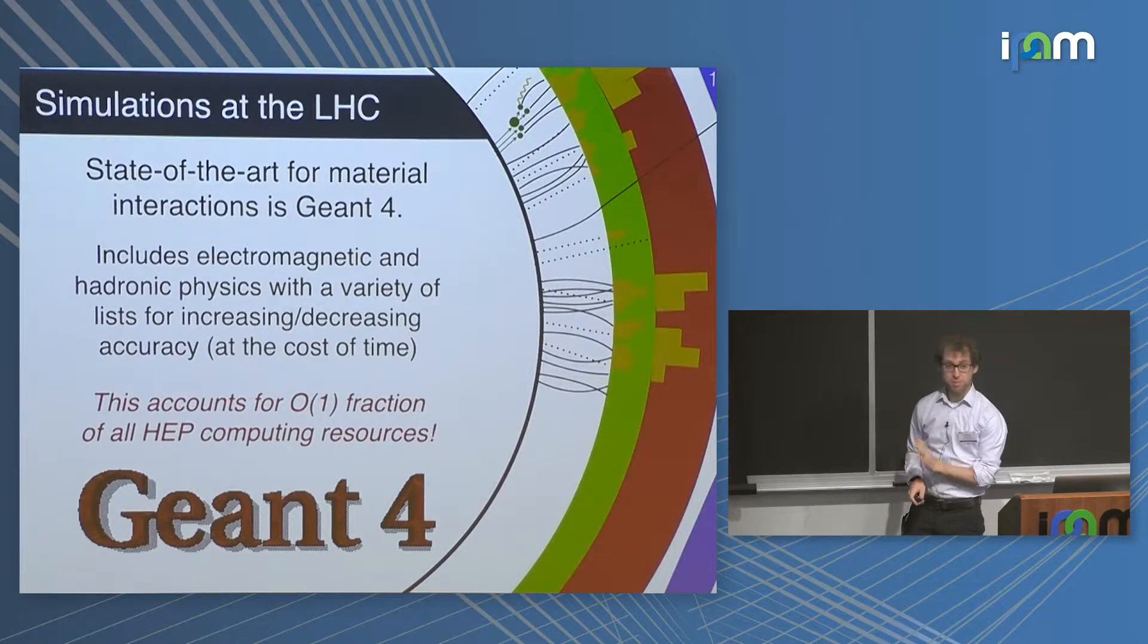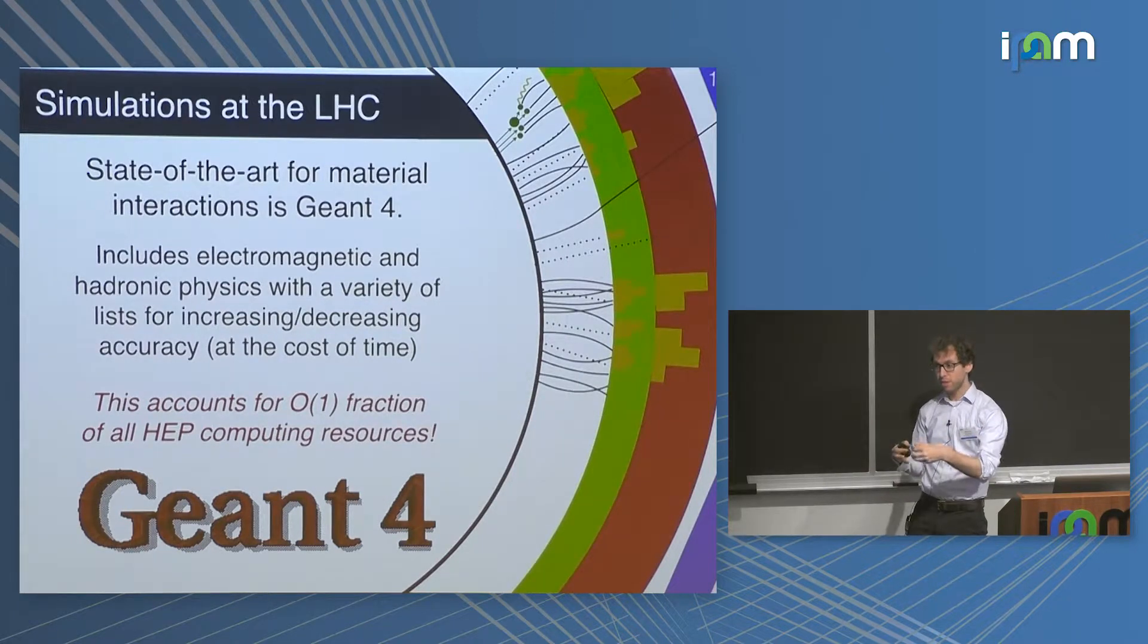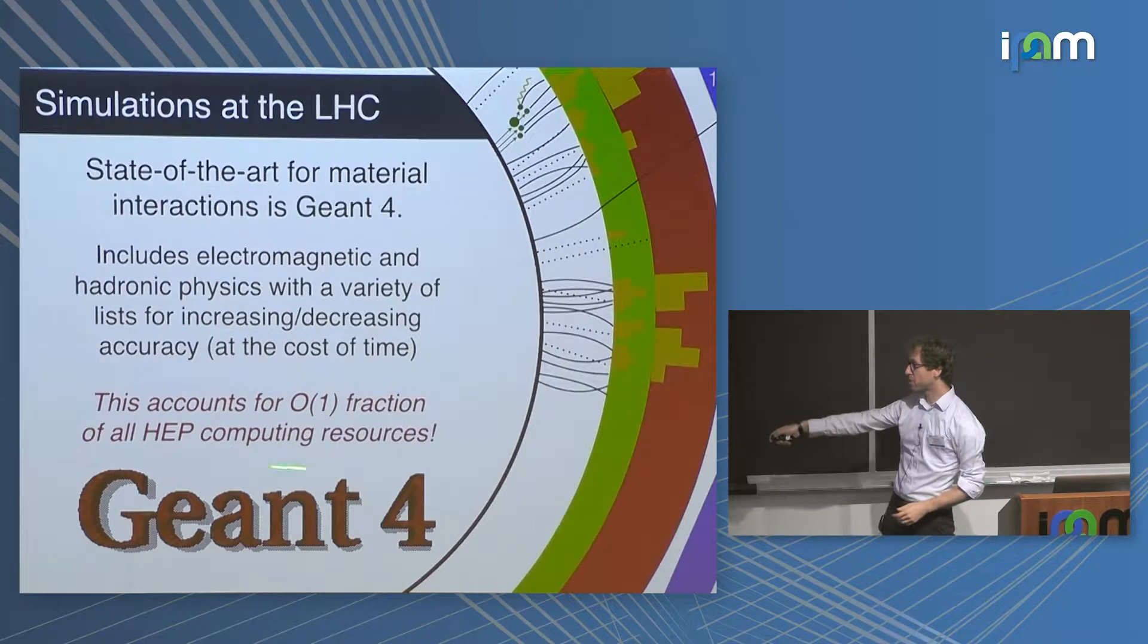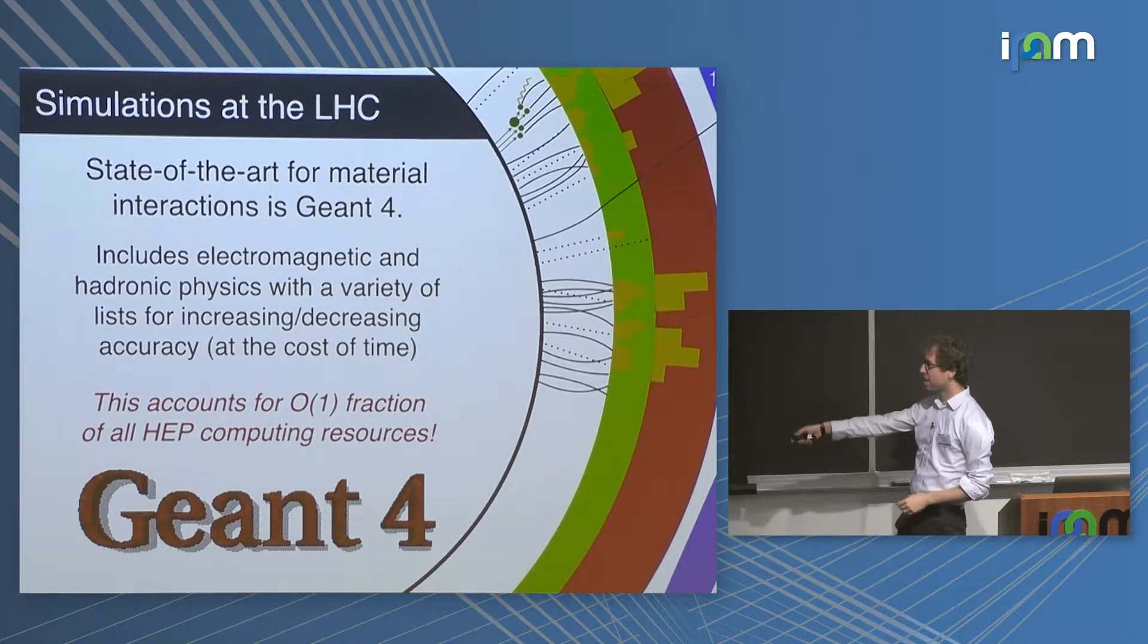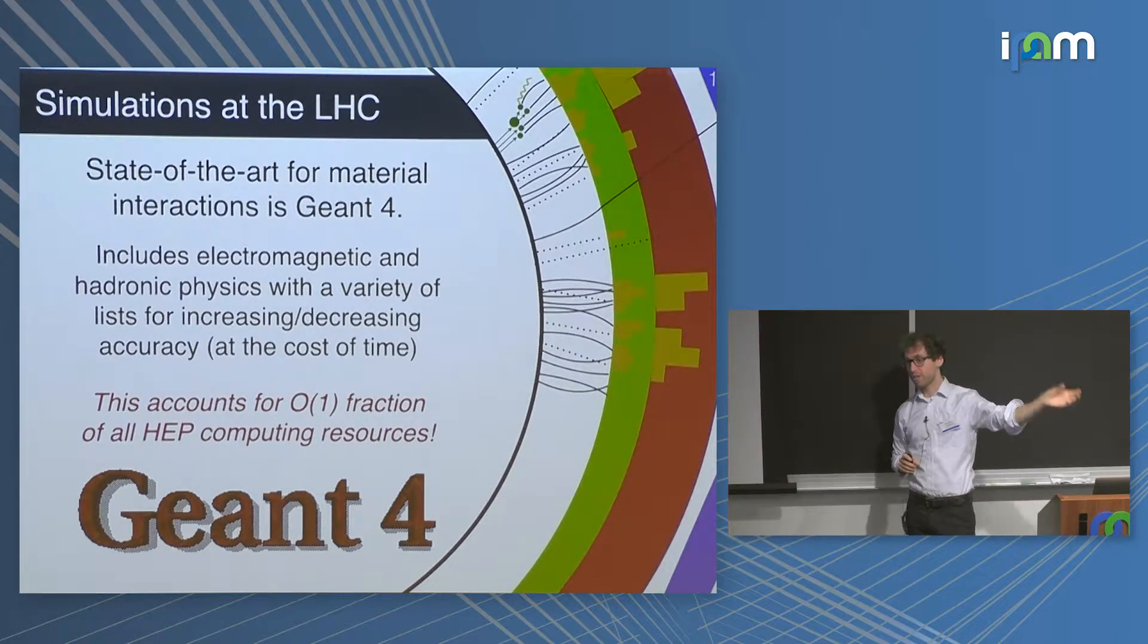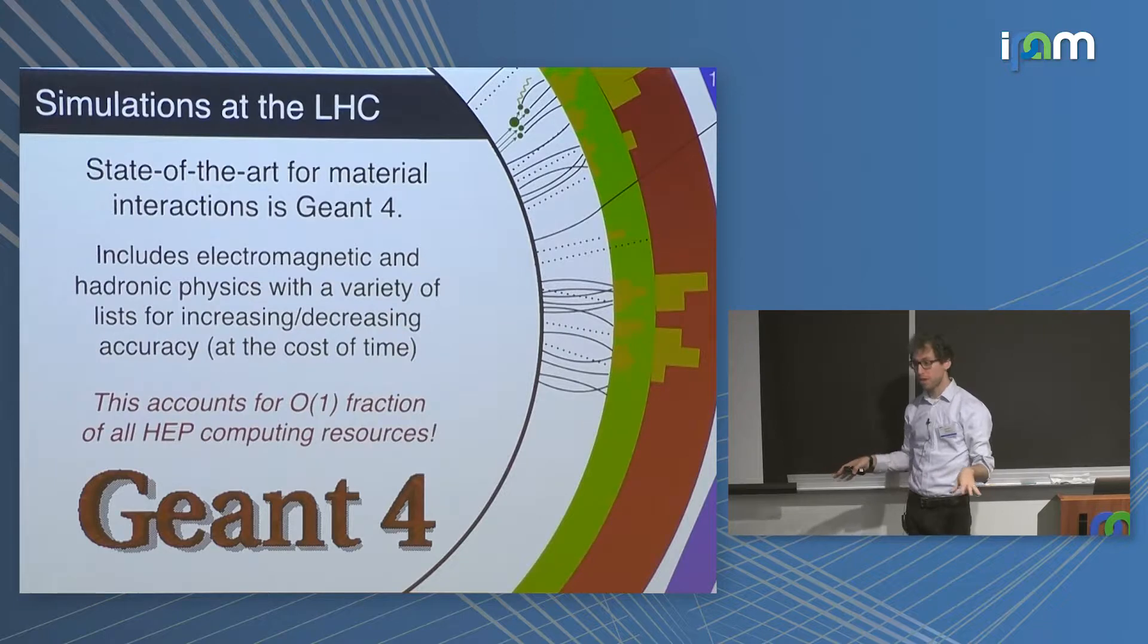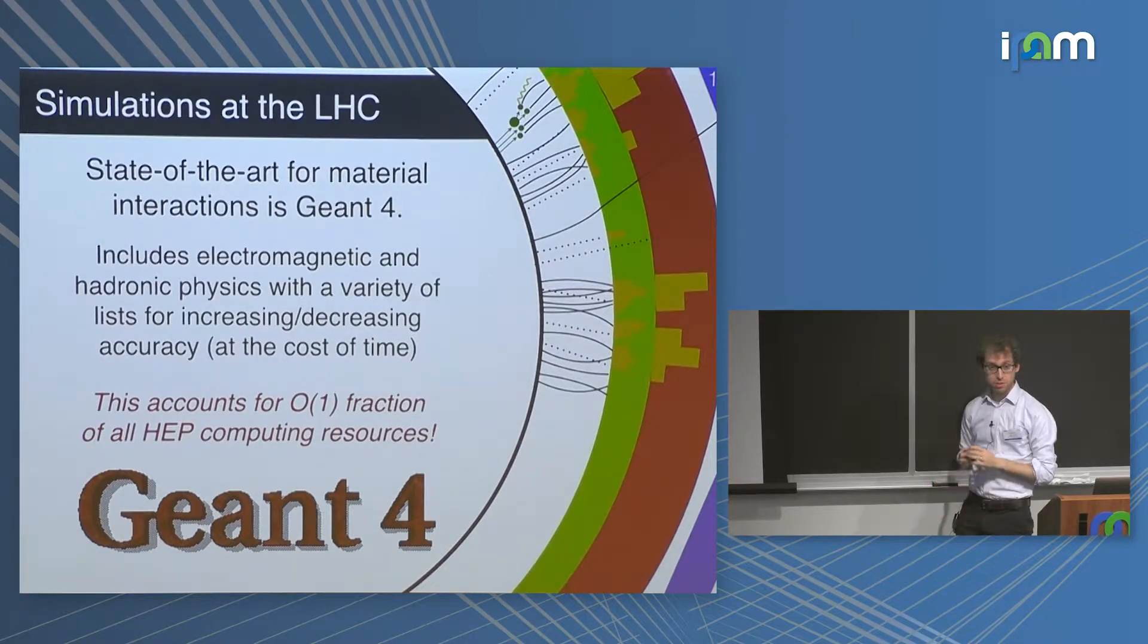So the most important part, in terms of speed or computational resources, is this last part. It turns out that simulating the hard scatter, the incoming protons, the stuff inside the protons, the outgoing hadrons, that's actually pretty fast. We spend an order one fraction of all high energy physics computing resources on the interaction of particles with our detector. We have to propagate the energy from hundreds of giga electron volts all the way down to the ionization energy, which are like electron volts. That huge energy range produces large cascades of many ionization particles and takes forever.